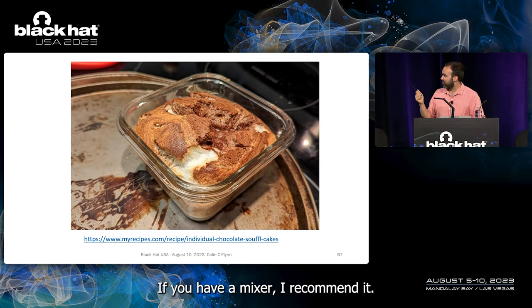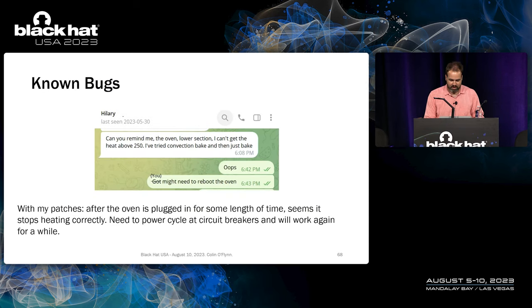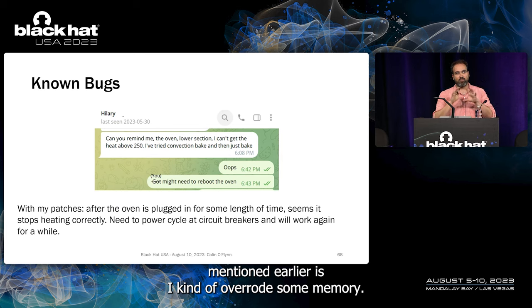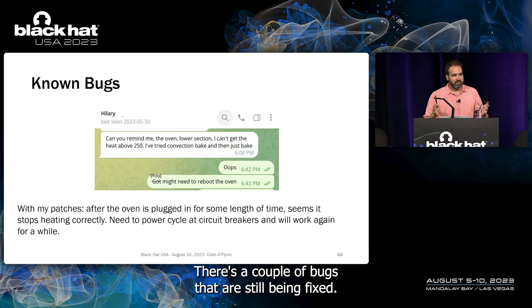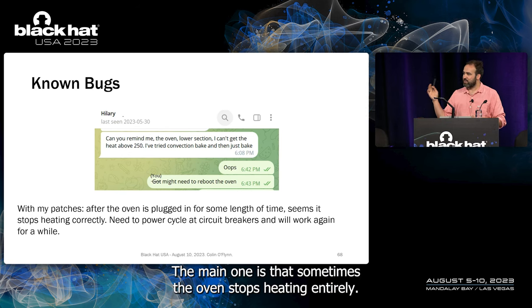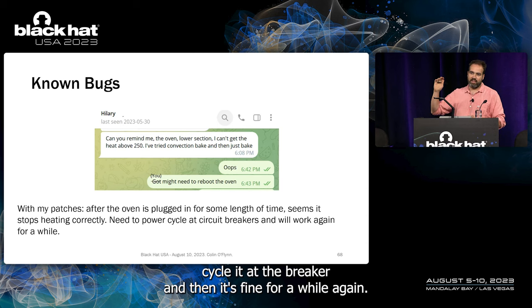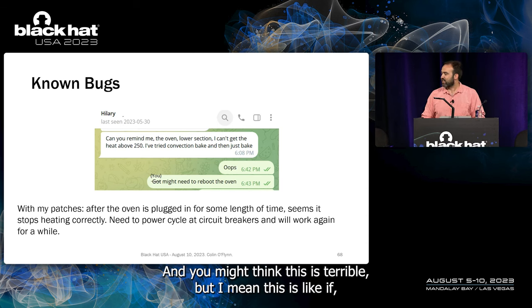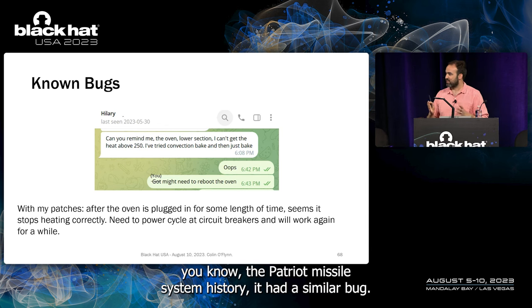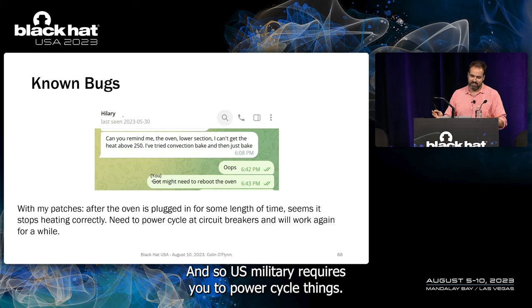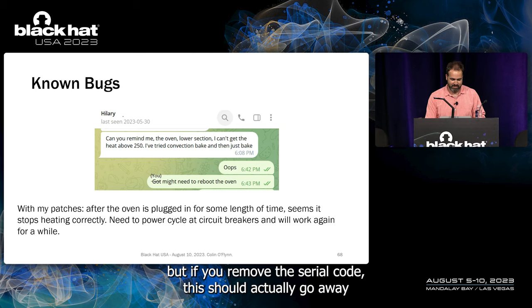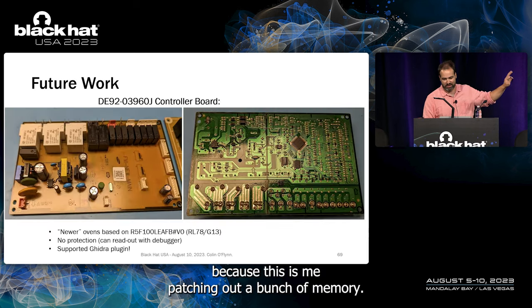One issue: I overwrote some memory when adding the serial monitor code, and there are still some bugs. The main one is that sometimes the oven stops heating entirely and needs a power cycle at the breaker. This is similar in spirit to the Patriot missile system's well-known timer bug — power cycling fixes it. Removing the serial monitor code should resolve this since it's caused by patching out memory I didn't fully understand.